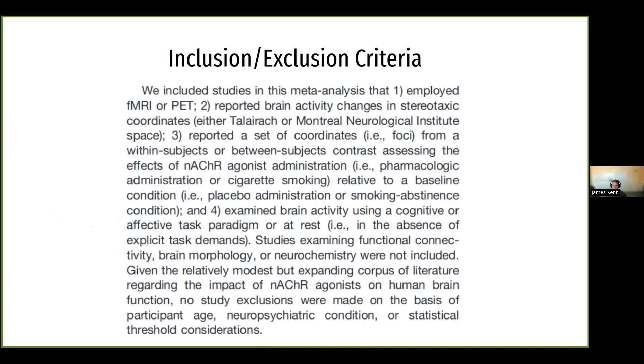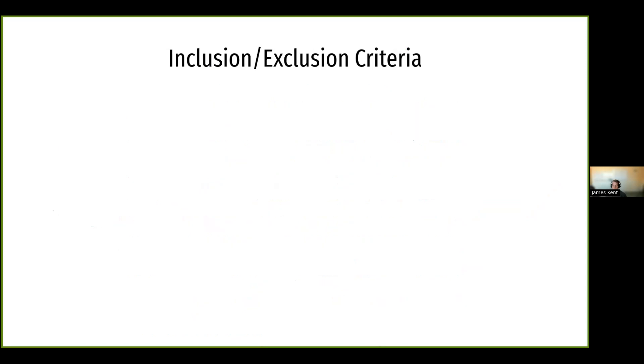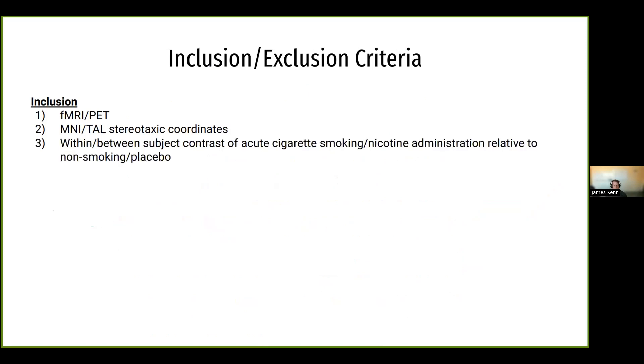I will present it to you in a more meaningful way so that we can understand and break down the components better. So for inclusion, it has to be an fMRI or PET study. And the coordinates from the results need to be reported in either MNI or Talairach stereotaxic coordinate spaces. For the specific contrast, it needs to be a within or between-subject contrast of acute cigarette smoking nicotine administration relative to a non-smoking or placebo group. And they are looking for any cognitive or affective task or even have the participants at rest and not engaging in any explicit task. That's what we're looking for.